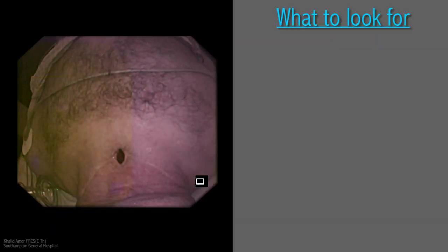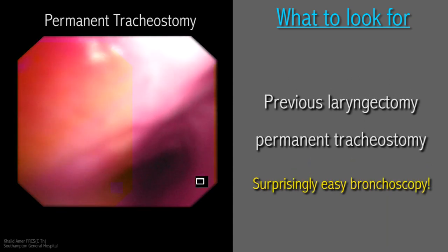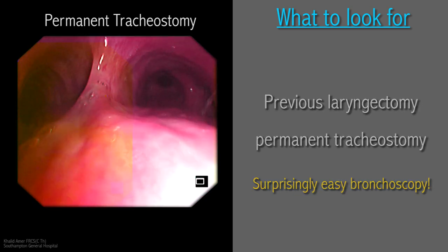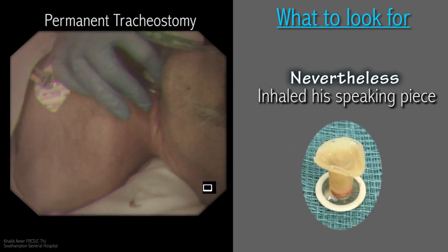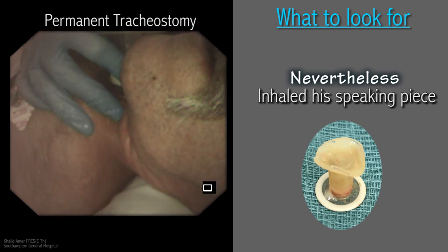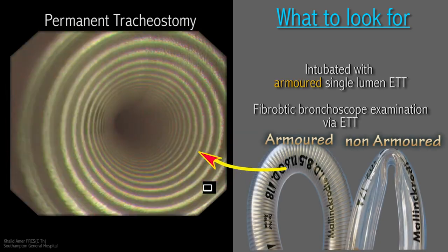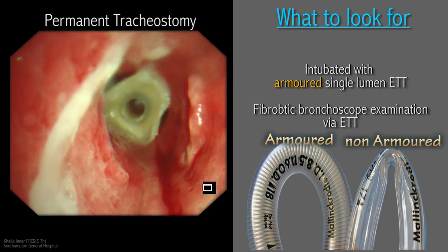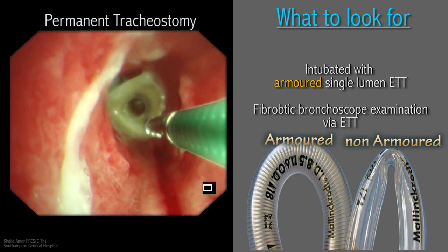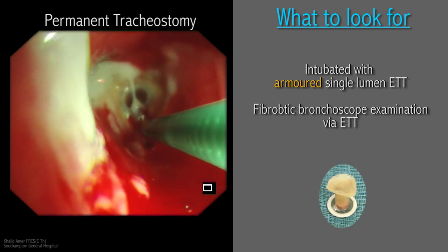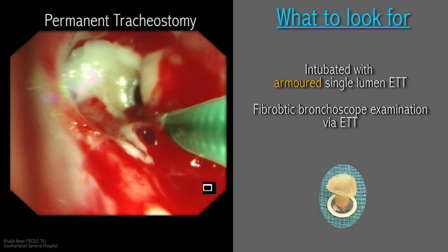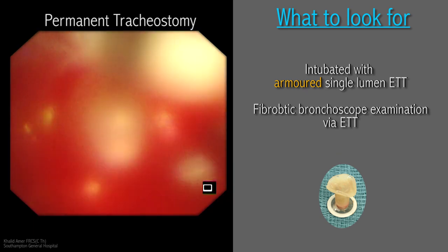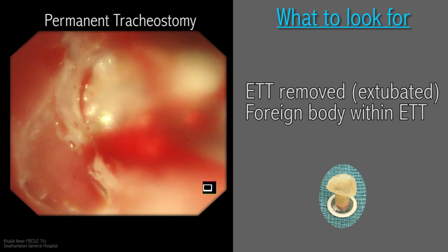Sometimes it is easier to perform bronchoscopy in patients with abnormal anatomy, such as in a patient with a permanent tracheostomy following laryngectomy for cancer — without need for rigid bronchoscopy, introducing the flexible scope was a breeze. However, these patients can easily inhale their speaking piece if not careful. The following footage shows such a patient who was intubated via a tracheostomy with an armour tube and a flexible scope passed through the armour tube. The plastic speaking piece was grasped with wire forceps, brought inside the armour tube, and the whole mechanism was withdrawn, extubating the patient. This method of extraction avoids slippage of the foreign body when withdrawing the wire forceps through the ET tube.